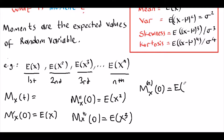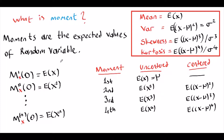If you take the nth derivative of the moment generating function and plug in zero, then you obtain the nth moment. We said that moments are the expected values of the random variable, and we learned that the first derivative of the moment generating function at zero equals the first moment. Similarly, the second and nth derivatives of the moment generating function equal the second moment and nth moment respectively.